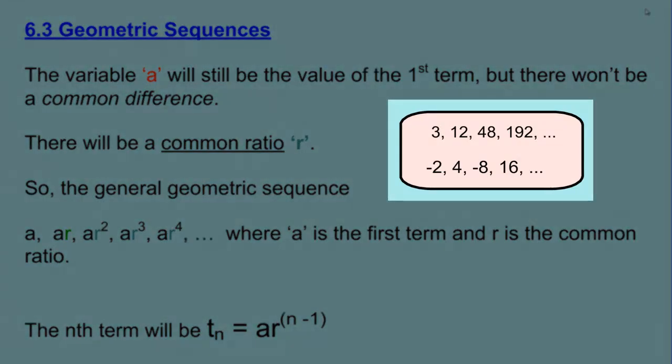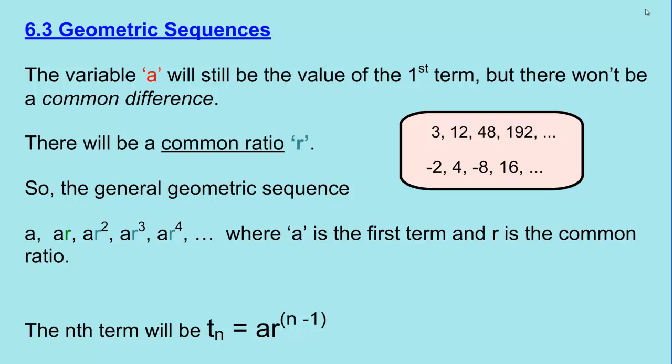In the pink shape here, I have two examples of geometric sequences. The first example starts with the number 3, and then as we go further on from term to term, notice how each term is multiplied by 4 to get to the next term. So 3 times 4 is 12, 12 times 4 is 48, and 48 times 4 is 192. The second example is also an example of a geometric sequence, but the first term is negative, so negative 2. And then to get to the next term, we have to multiply by negative 2. So negative 2 times negative 2 is positive 4, 4 times negative 2 is negative 8, and then negative 8 times negative 2 is positive 16, and so on and so forth.